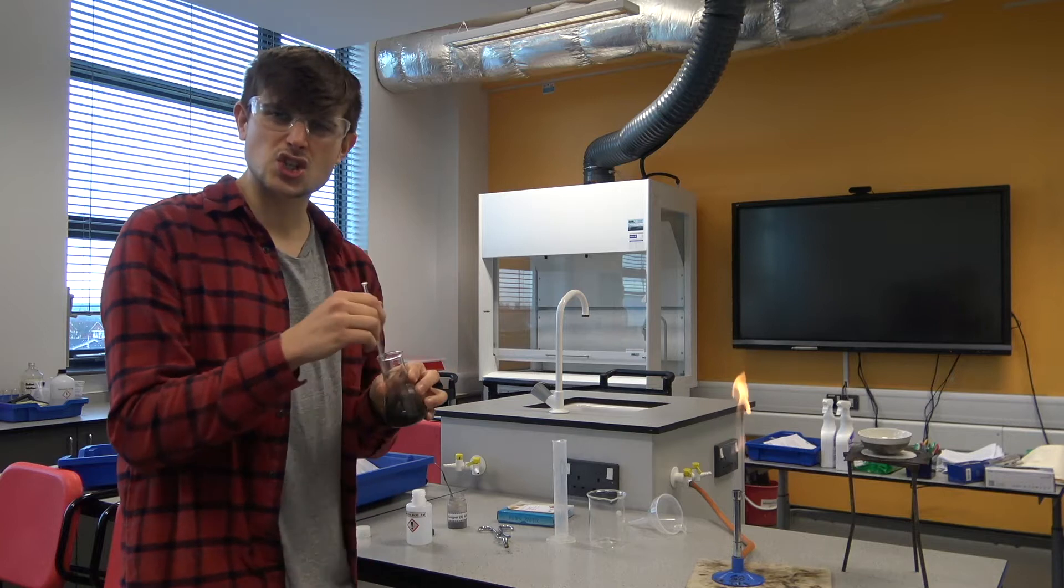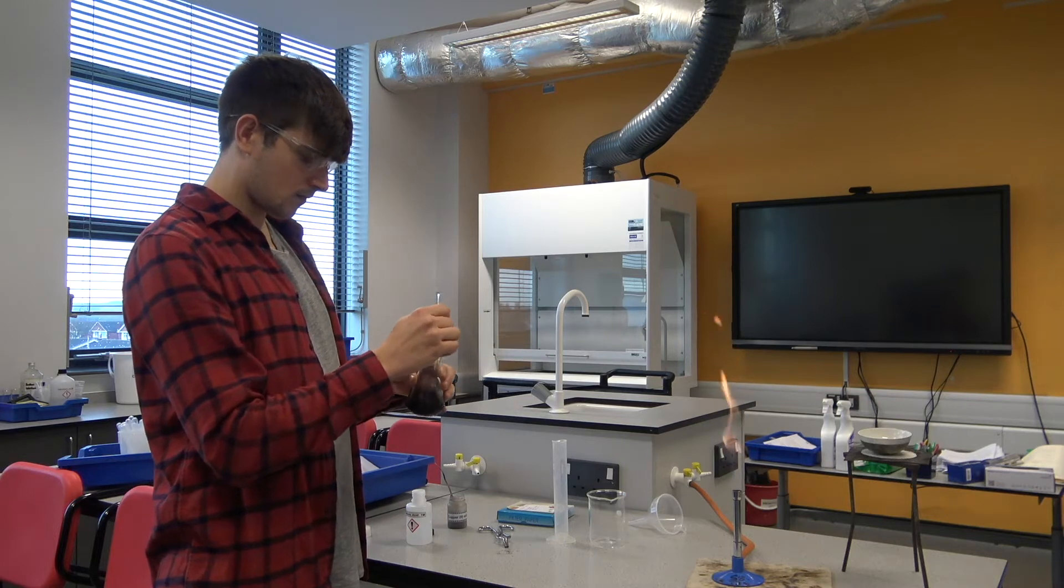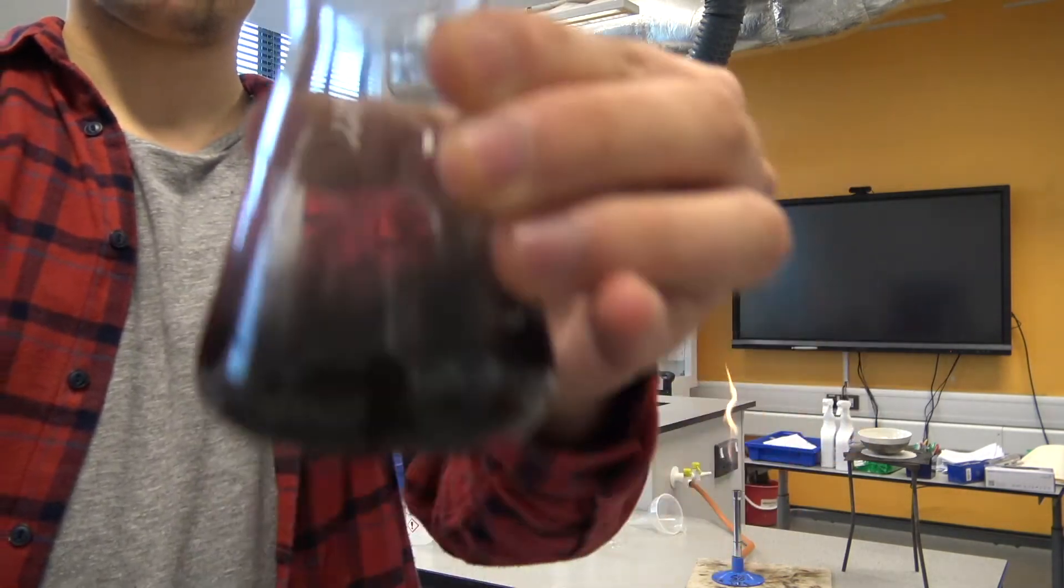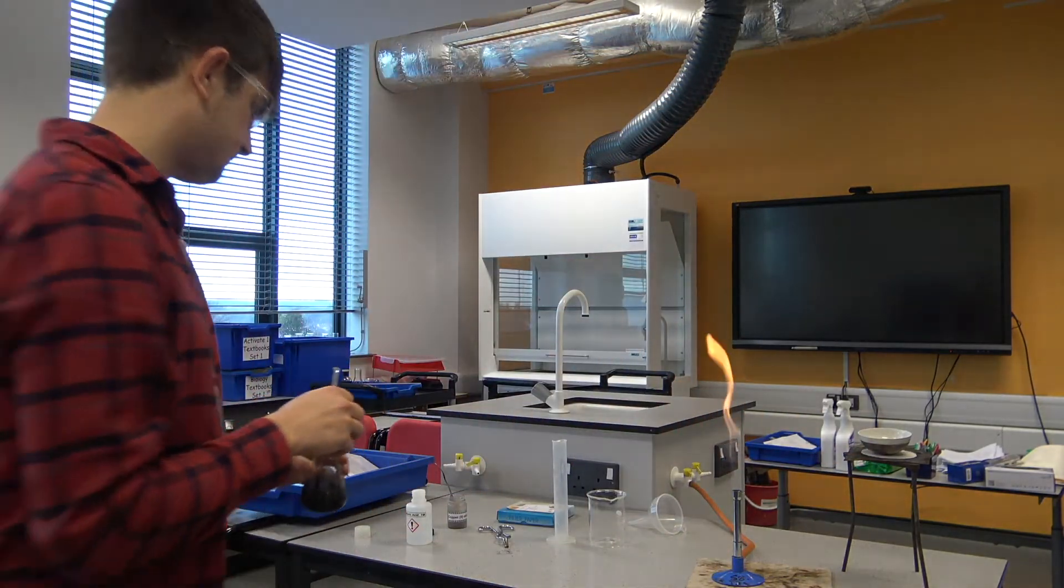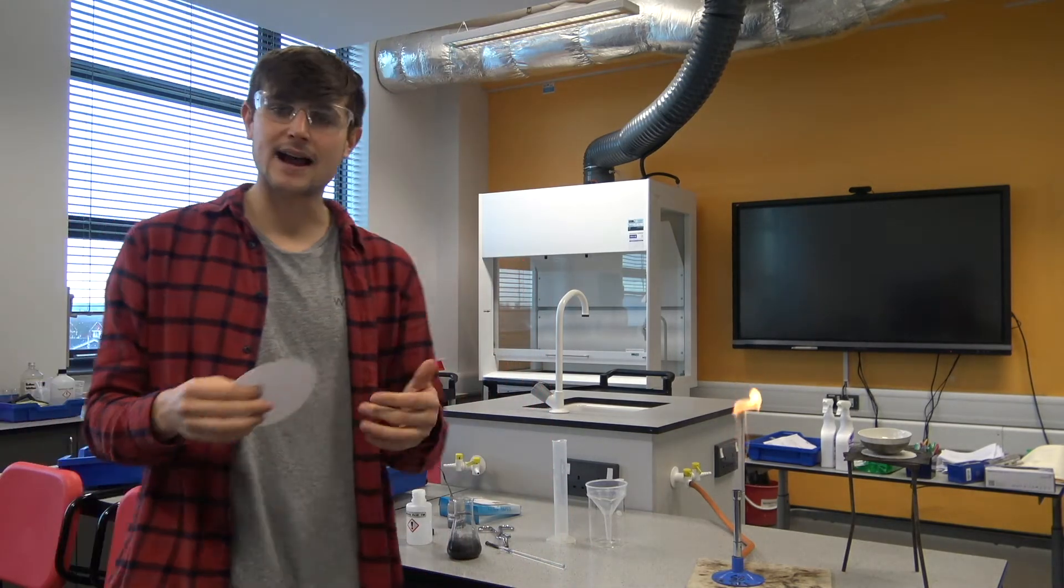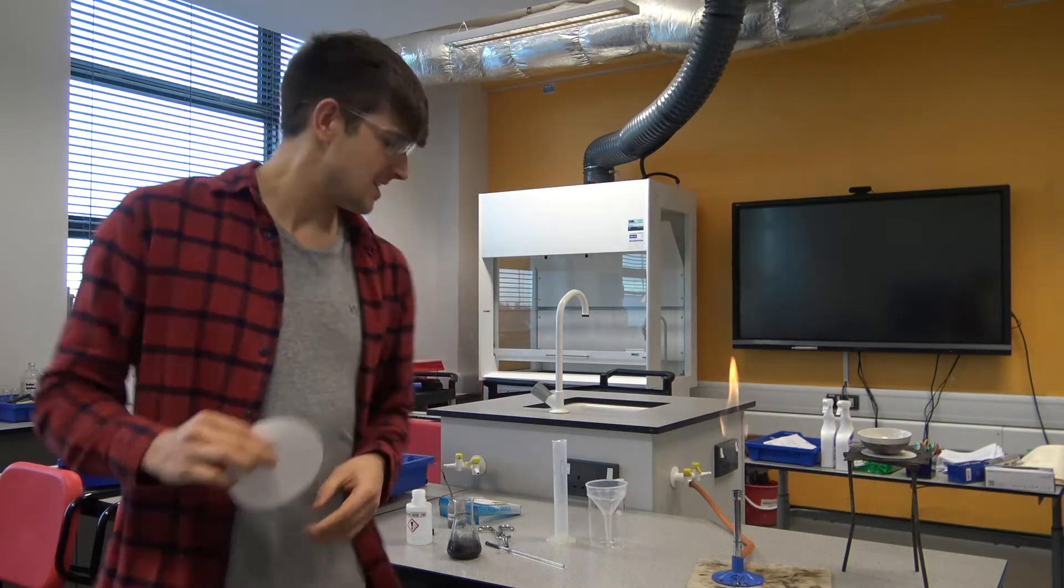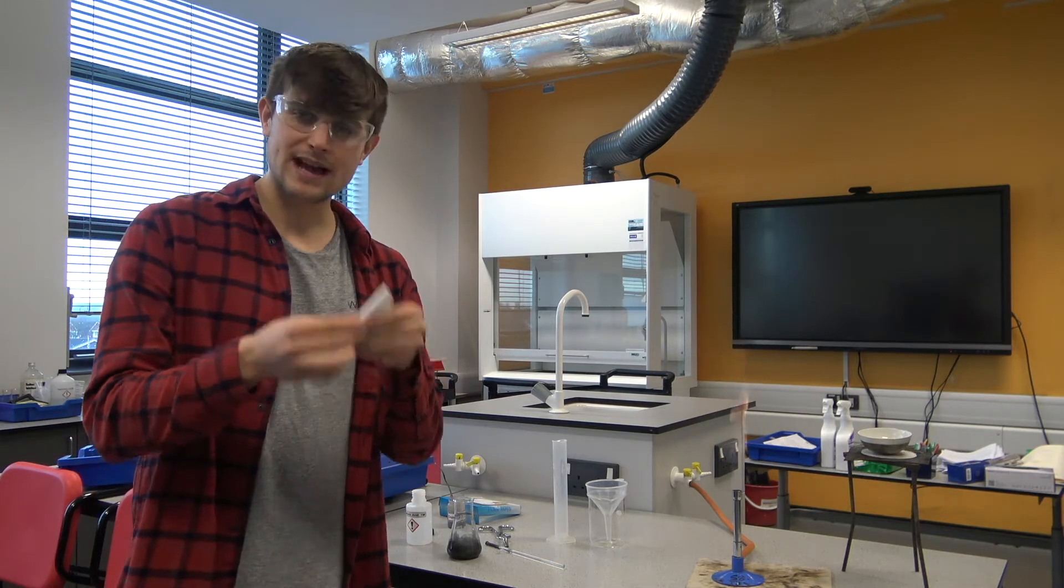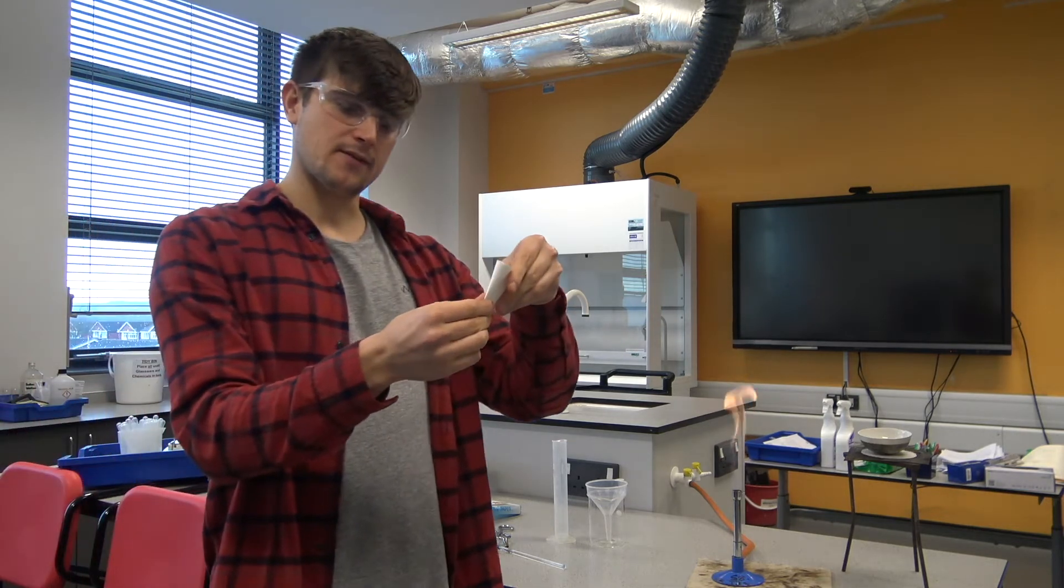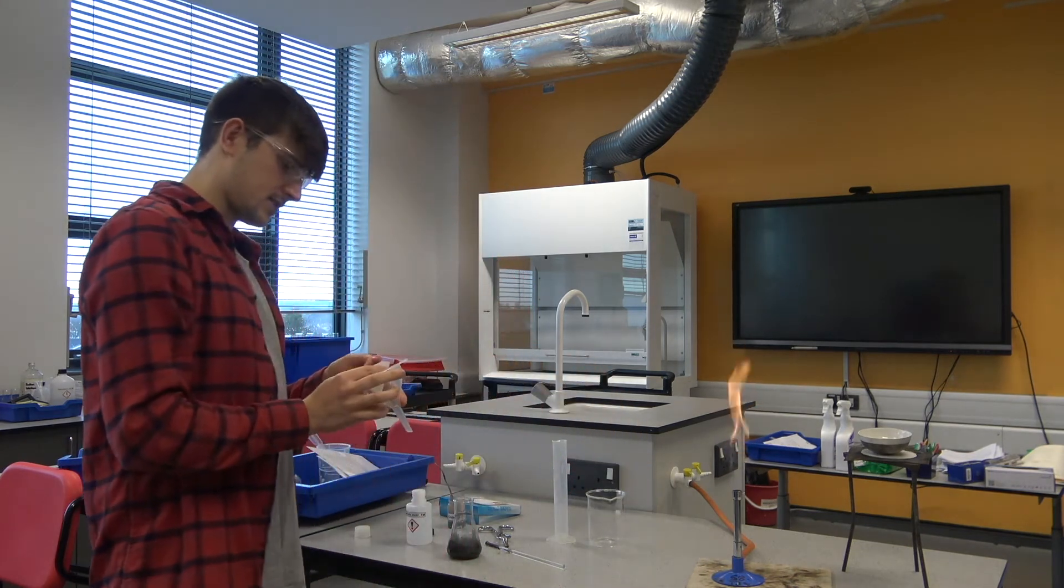The next part of the reaction is filtering that copper oxide which is unreacted inside. We said we added it in excess, so we need to get rid of that solid. The way we're going to do that is by using filter paper. The key to making filter paper is by folding it in half and folding it in half again, and you put that inside your filter funnel just like this.